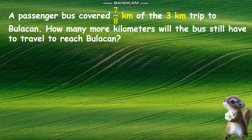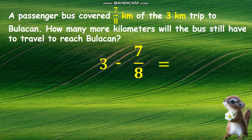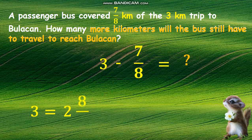Let's have another example. A passenger bus covered seven-eighths kilometers of the three kilometers trip to Bulacan. How many more kilometers will the bus still have to travel to reach Bulacan? The problem is asking for more kilometers the bus still has to travel to reach the destination. To solve that, we will subtract seven-eighths from three, but first, rename three as a mixed number with a fraction equal to one. Use the denominator of the fraction seven-eighths. It becomes two and eight-eighths.